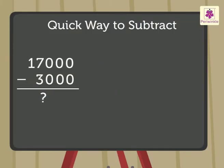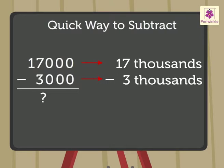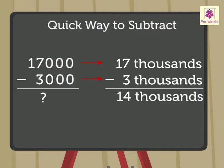Here, from 17,000s, I have to take away 3,000s. Thus, leaving behind 14,000s, so 17 minus 3 is equal to 14.